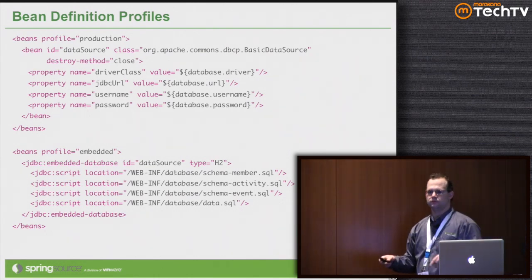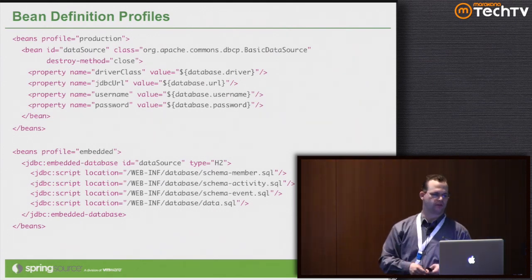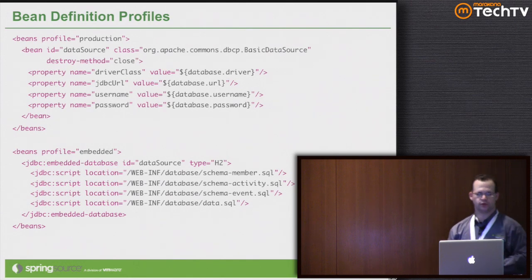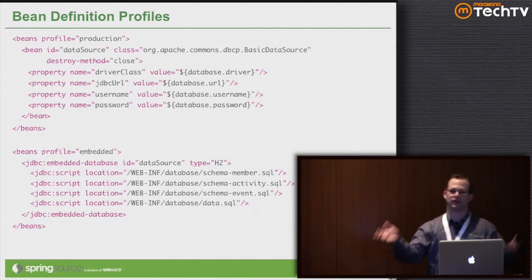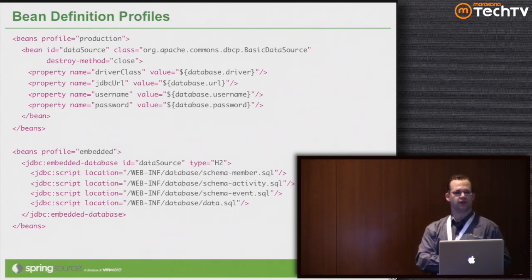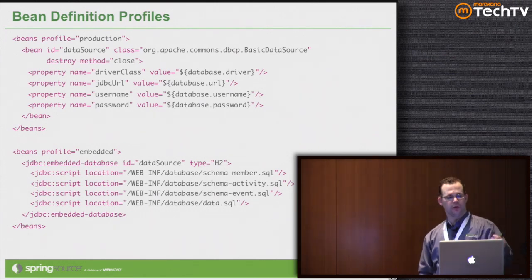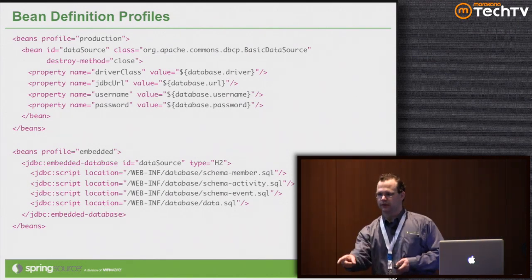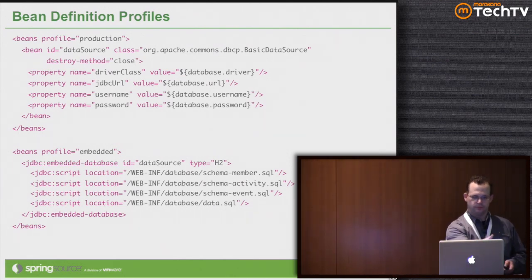Using profiles looks kind of like this in the XML. Normally you have an XML document with a beans element and then individual bean definitions. With this new profile support, you can nest beans declarations inside your outermost beans tag. The beans inside are grouped inside a profile — they are only active if that profile is active. You have to tell Spring that you want all the beans in your production profile to be active.